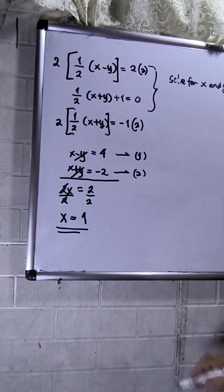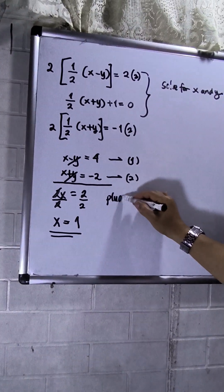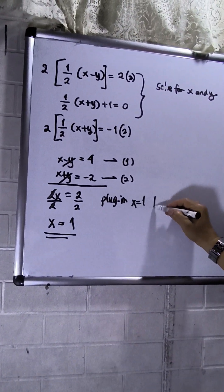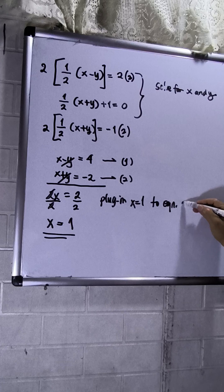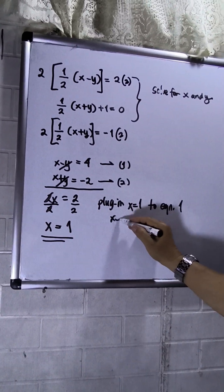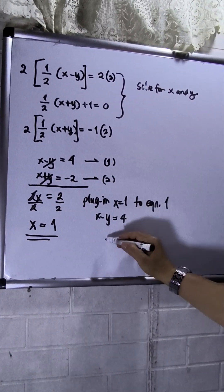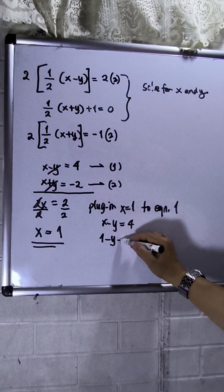And then plug in x equals 1 to equation 1. x minus y is equals to 4. So 1 minus y equals 4. Negative y is equals to 4.